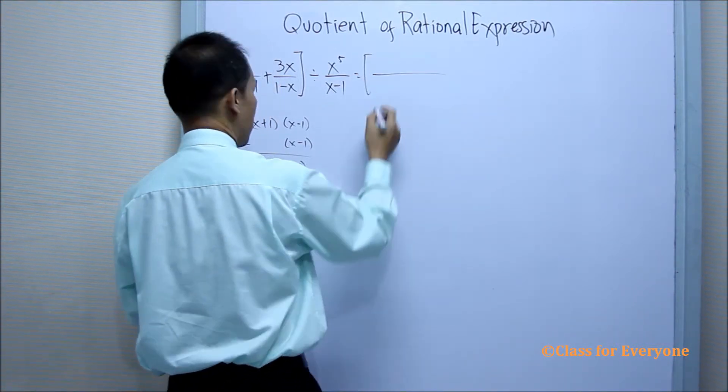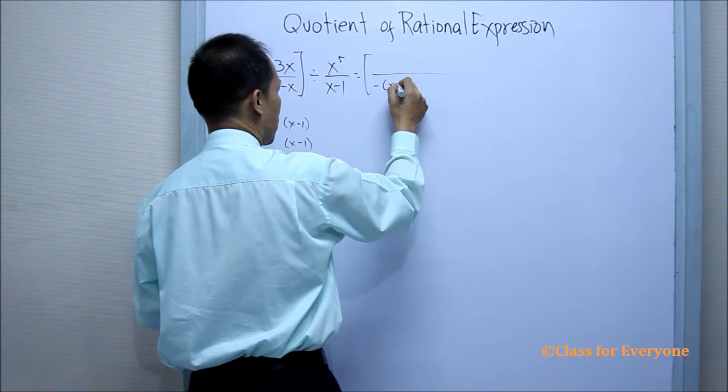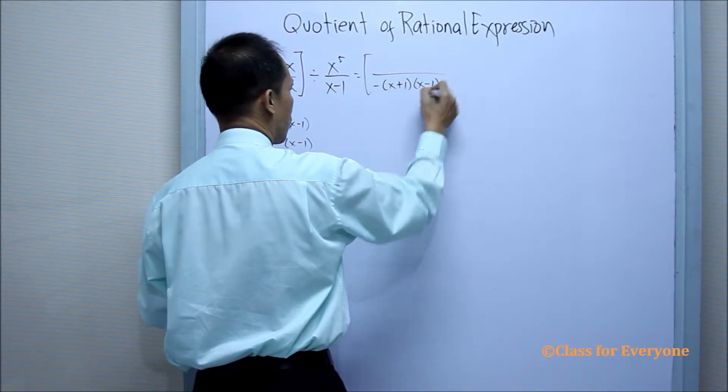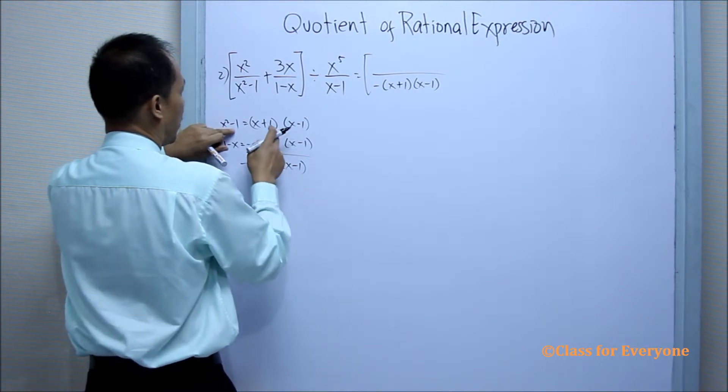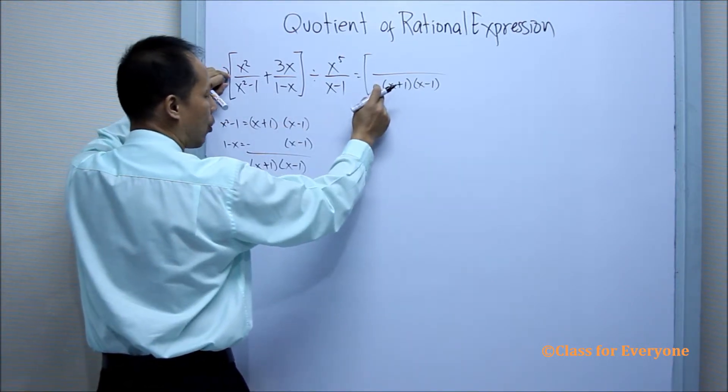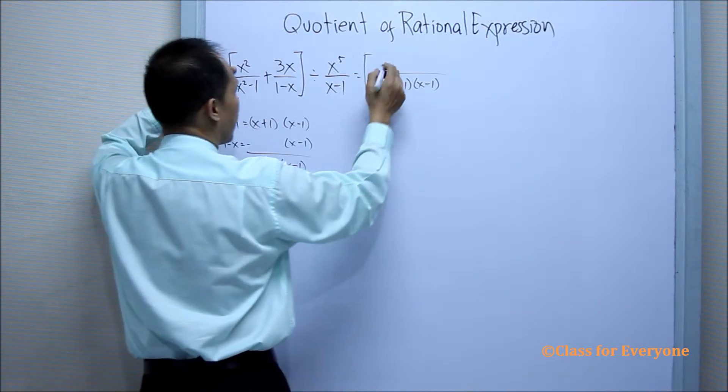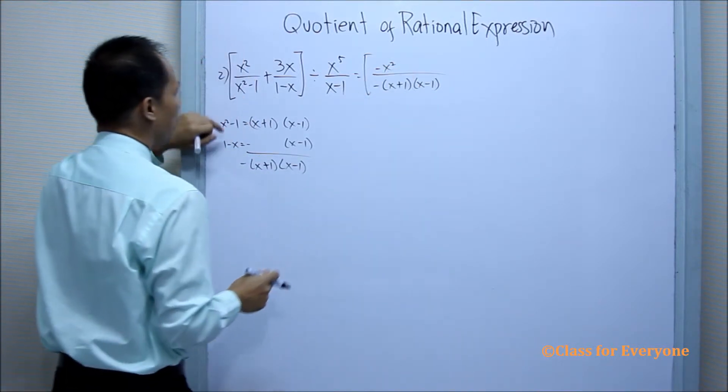Now, our LCD is negative x plus 1 and x minus 1. The LCD divided by the denominator will be negative only. So the quotient will be negative times x squared, which is negative x squared.